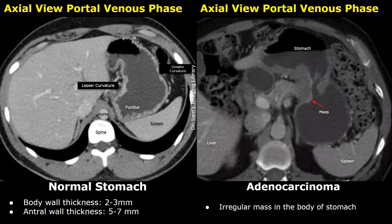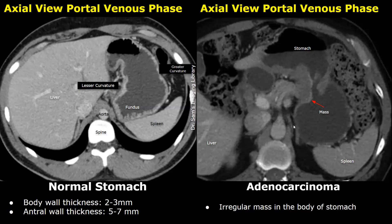This image also shows an irregular mass in the body of the stomach at the lesser curvature. The mass is enhancing during the portal venous phase. Its abnormally increased size suggests deeper invasion into the muscular layers of the stomach. However, the perigastric fatty tissue appears normal with its normal hypodense gray color, so the mass may not have invaded beyond the serosal layer.